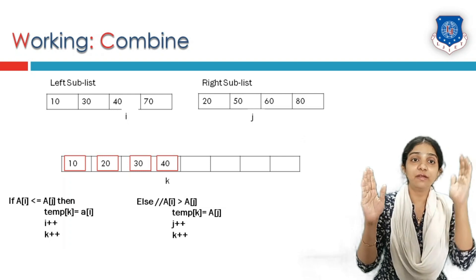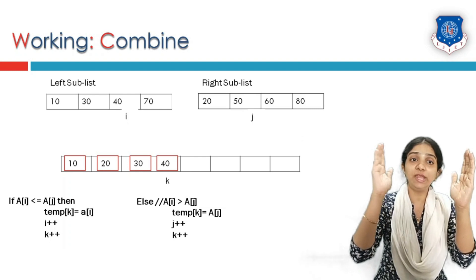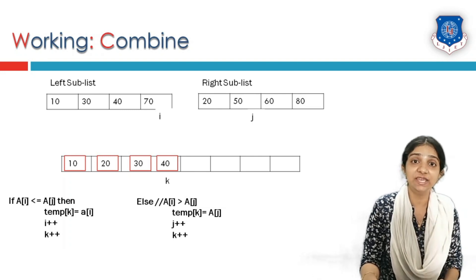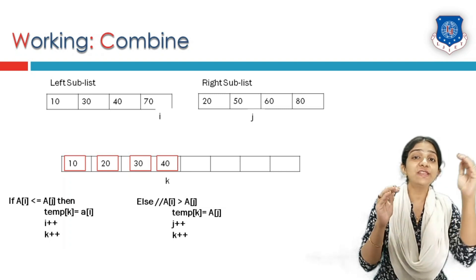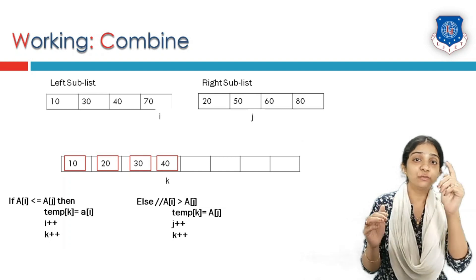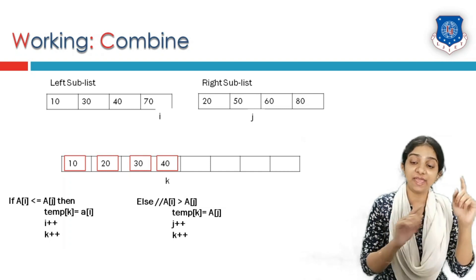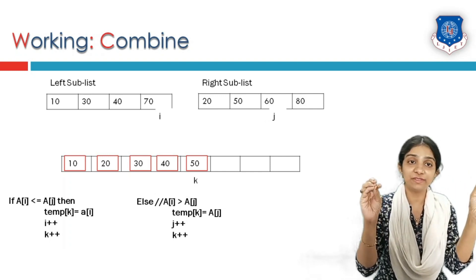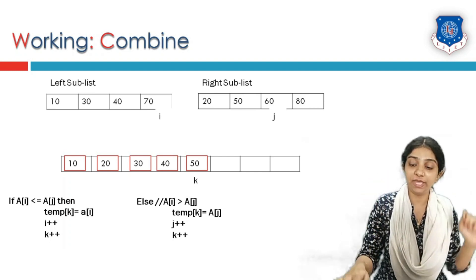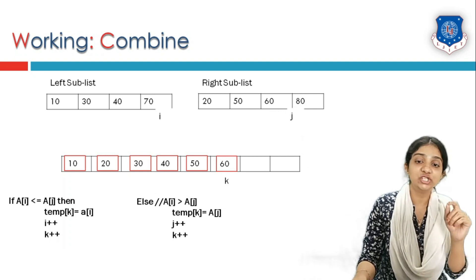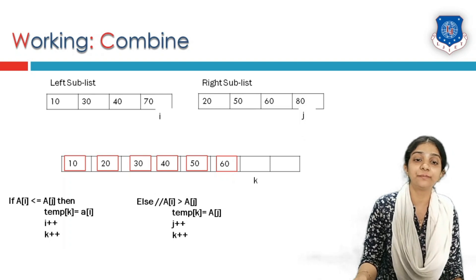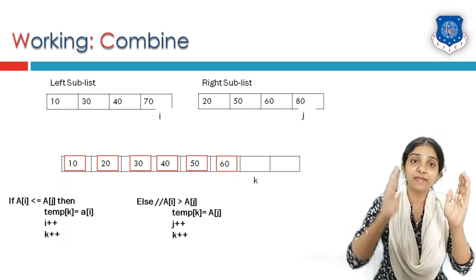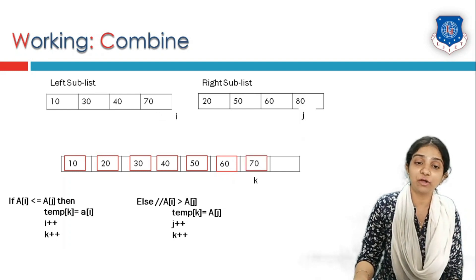After j is incremented, next element is 60. Comparing 70 and 60 — 60 is lesser, so 60 is copied and j and k are incremented. Now comparing 70 with 80: 70 is less than 80, so 70 is copied and i is incremented. Now i is pointing to an index outside the left subarray — i is out of bounds — so we copy the remaining element of the right subarray, which is 80.